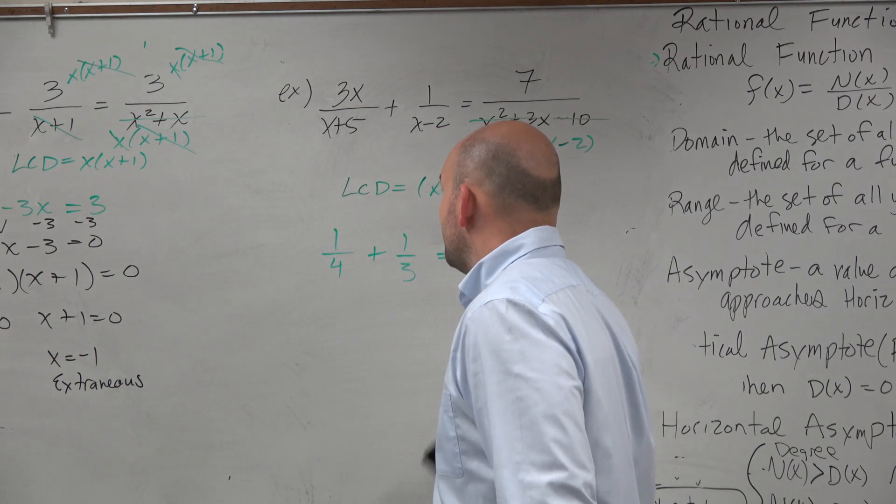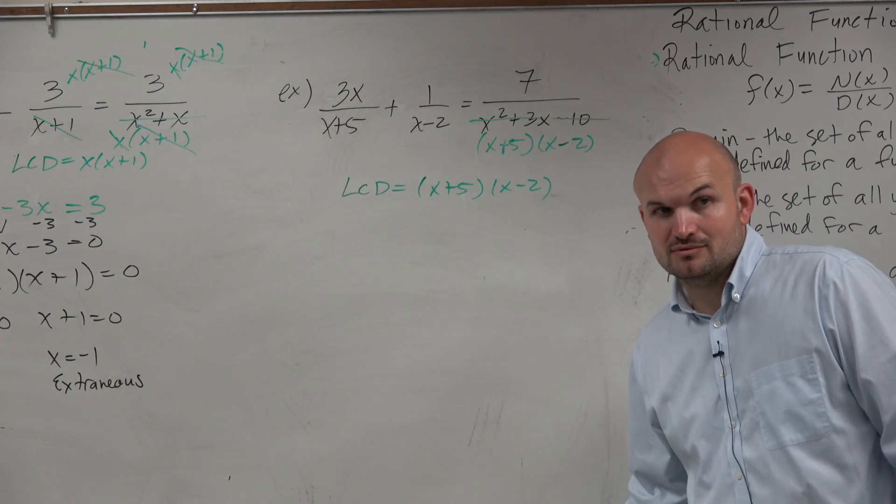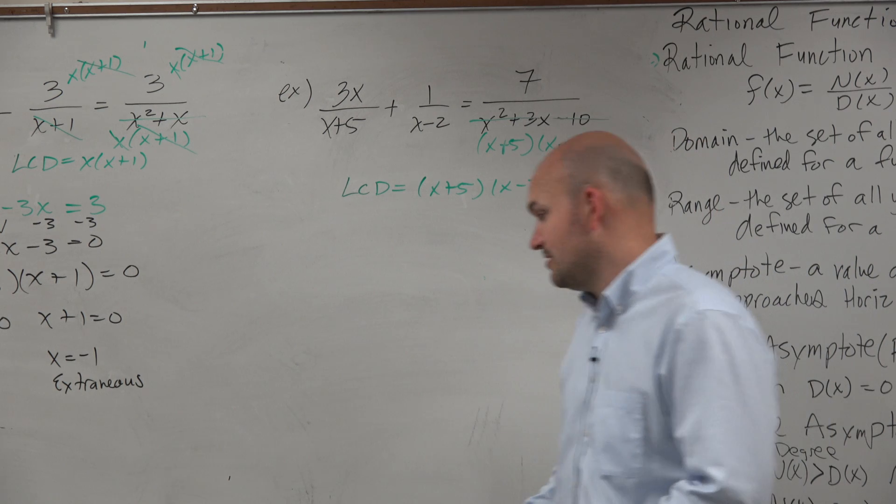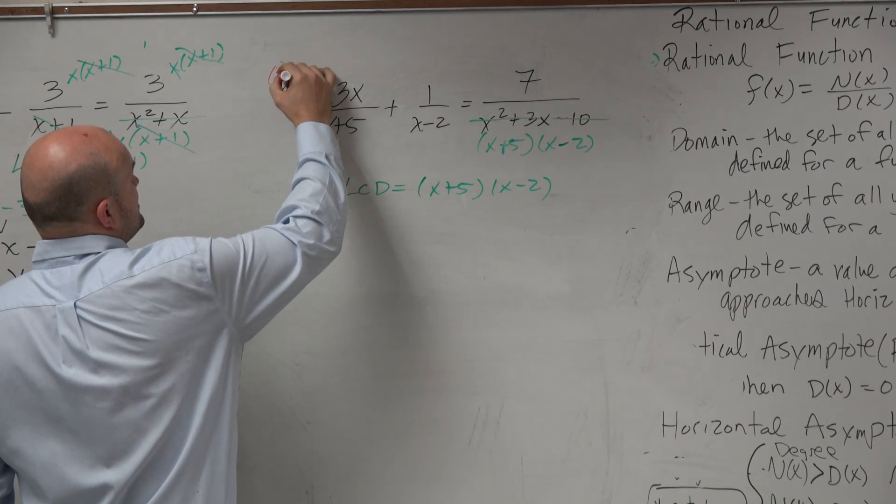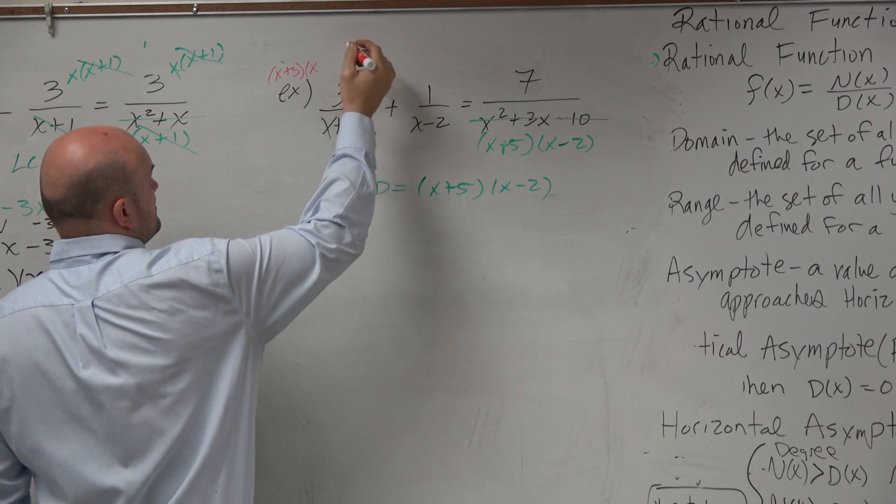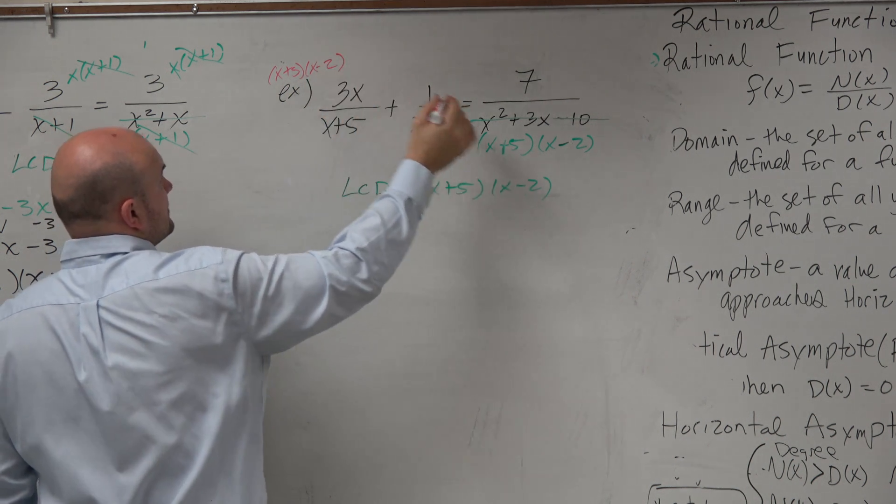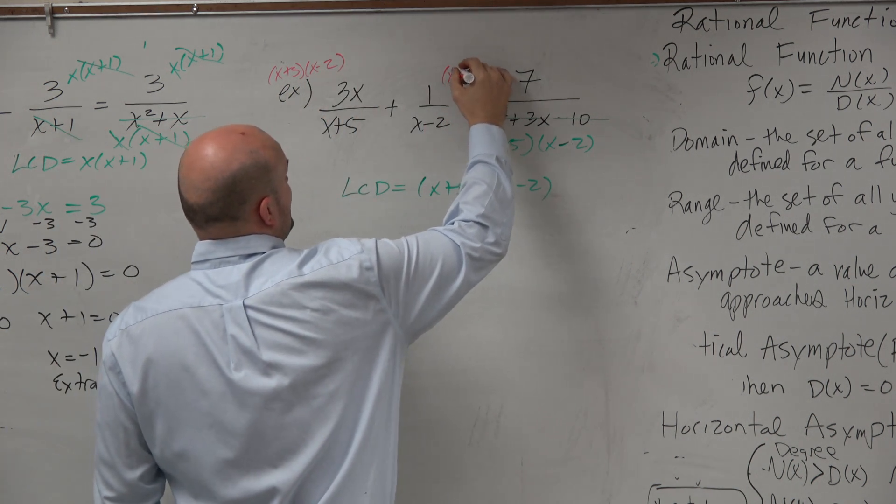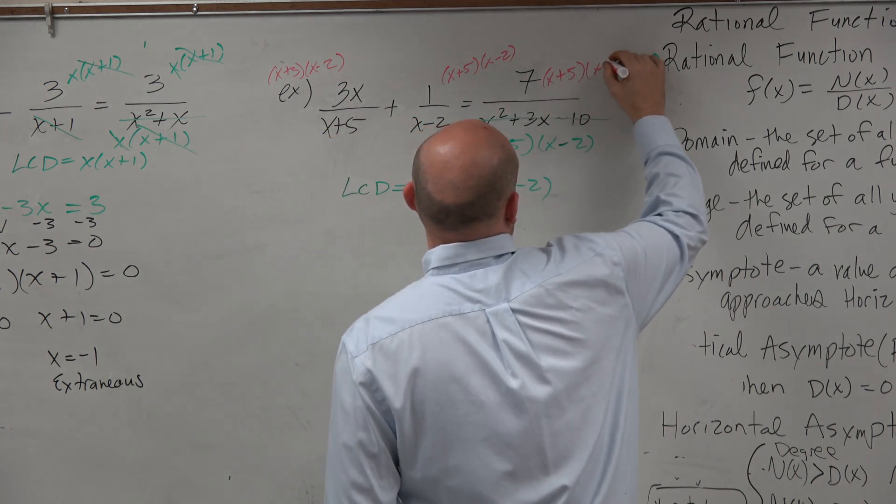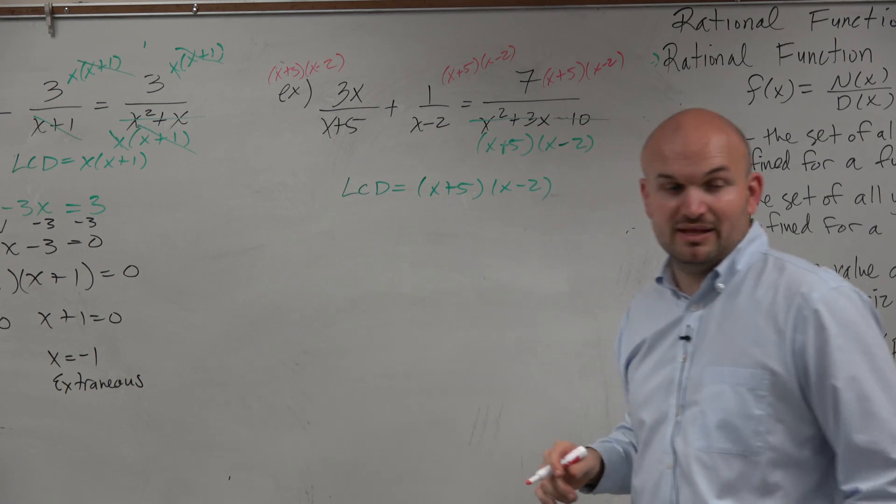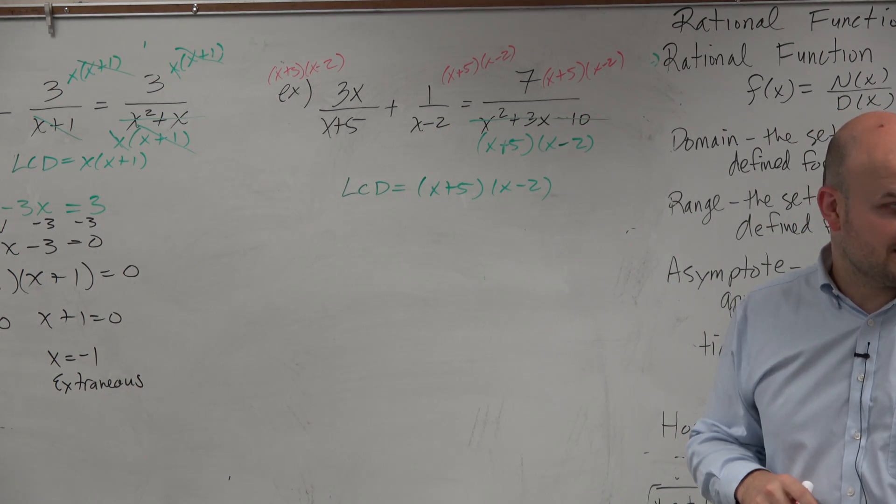So once we identify the LCD, the best practice is then to multiply everything by your LCD. Let's use red. So x plus 5 times x minus 2, x plus 5 times x minus 2, x plus 5 times x minus 2. And if we did multiply by the LCD, then we shouldn't have any more fractions, right?